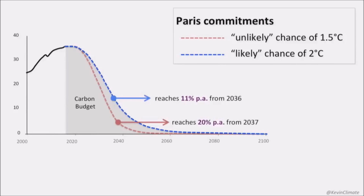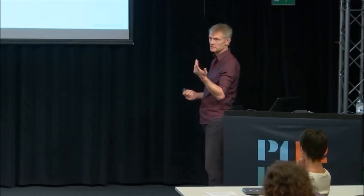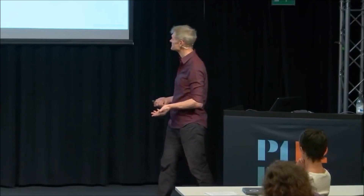For 1.5 degrees centigrade — that poorer, very low-emitting countries have requested and we've agreed to try and help them with — we need about 20% per annum during the 2030s. Remember, this is at a global level, and the equity component requires us in the wealthy parts to lead on this. So it would be much more challenging than that for Sweden or for the European Union.